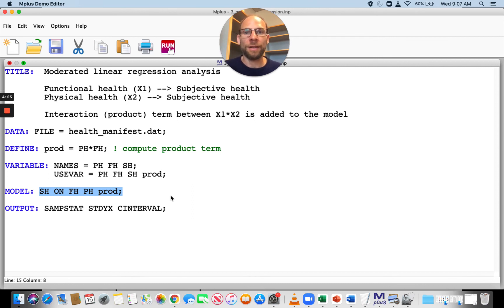And then you can take a look in the output. You can take a look at the regression coefficient for that product term. And if that regression coefficient b3 for that product term variable is statistically significant, then that can indicate that there might be a significant moderated effect or a significant interaction effect.